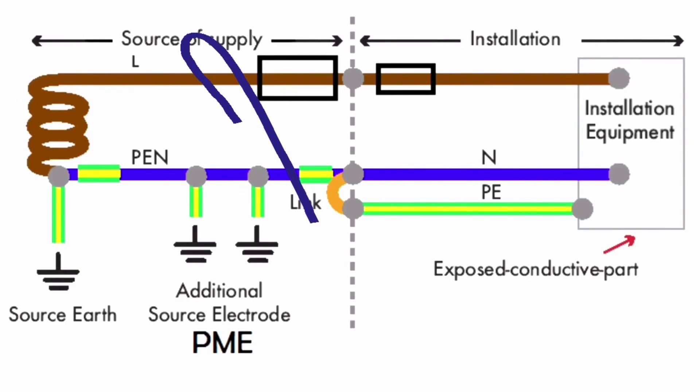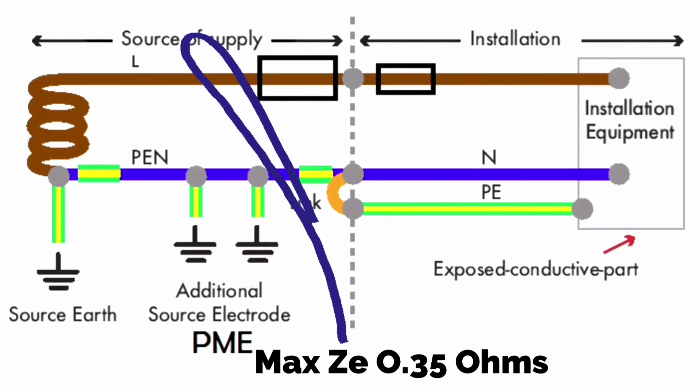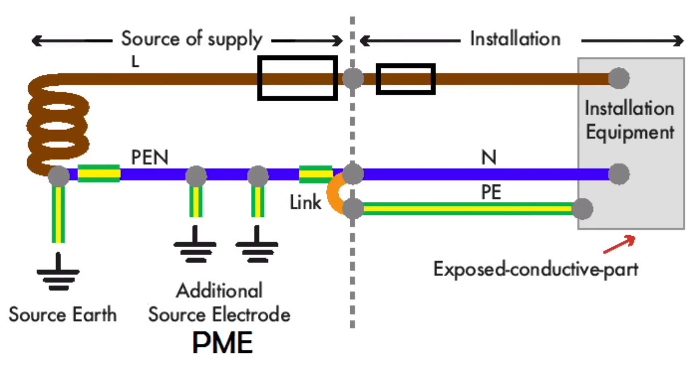The external earth fault loop impedance of the Supply Authority's cable is a maximum of 0.35 ohms. So to recap, whether Supply Authorities provide an installation with a combined Neutral and Earth or PEN conductor into the installation, the Earthing Arrangement is T-N-C-S. The Terra Neutral are combined within the Supply Authority's cable and then separated within the installation itself, making the Earthing Arrangement T-N-C-S.